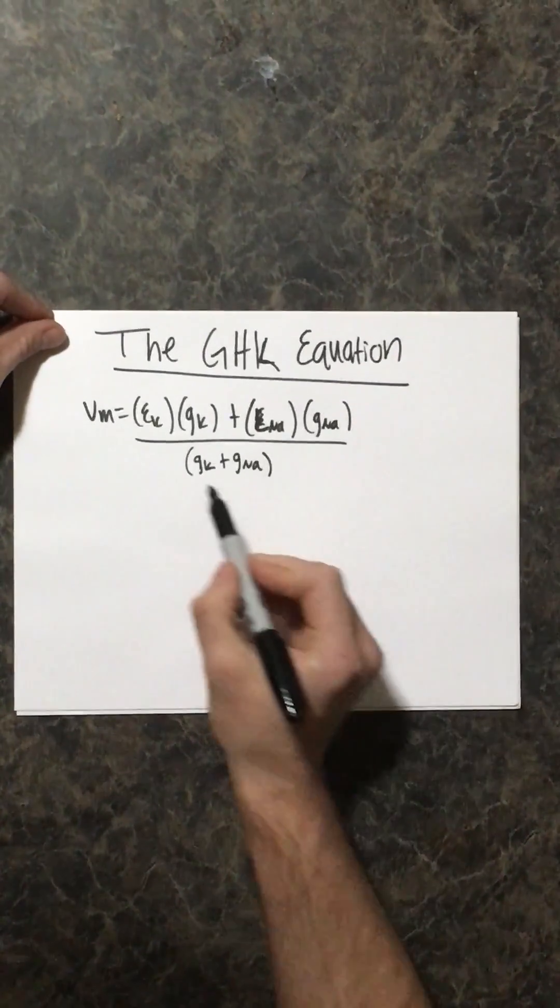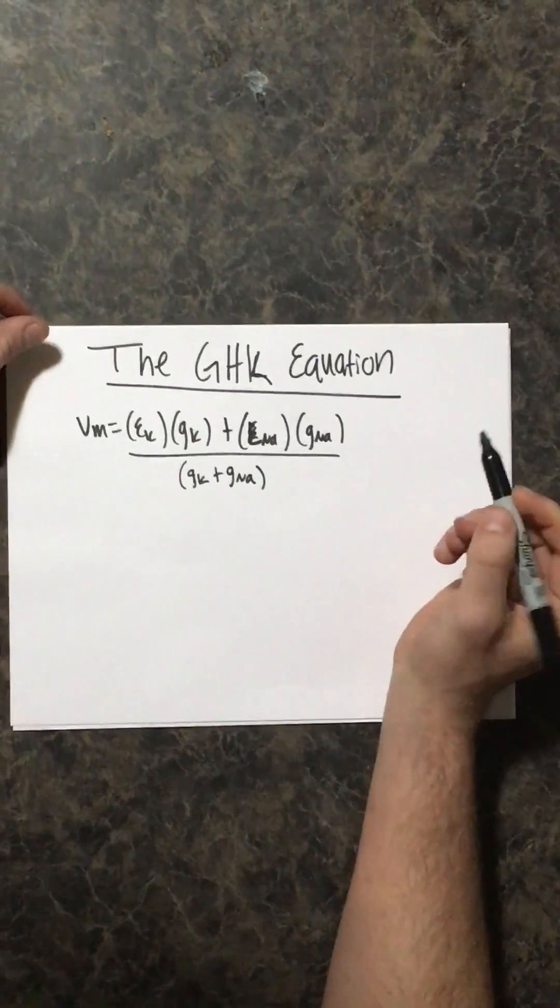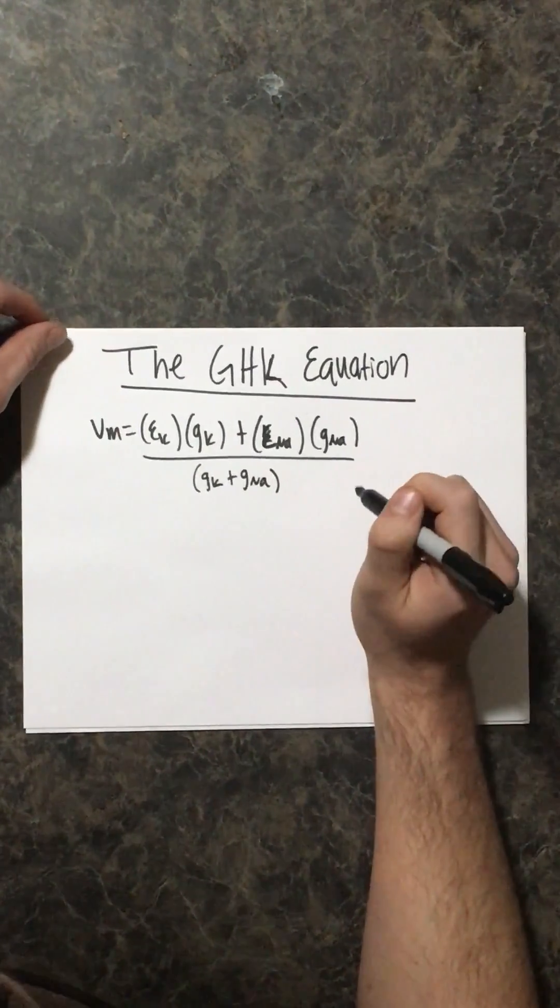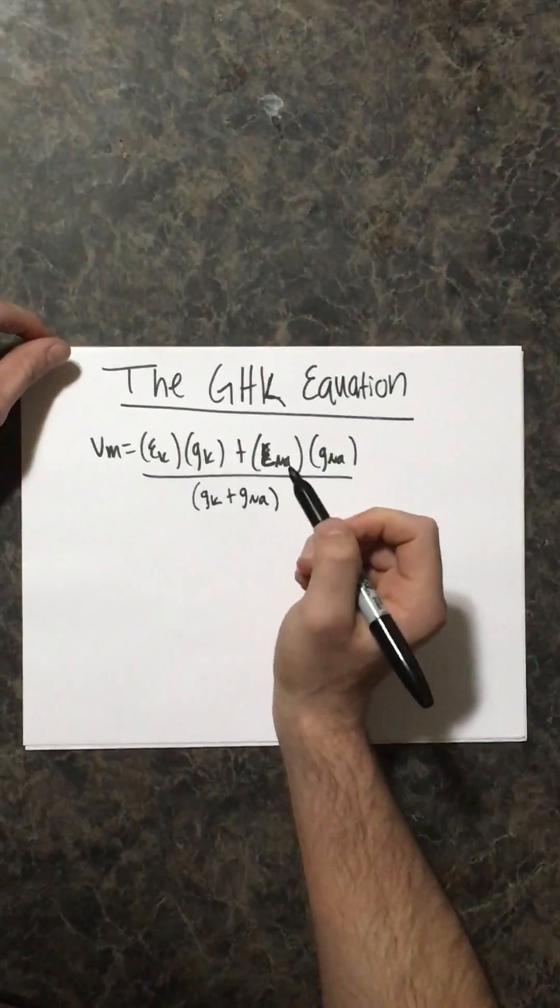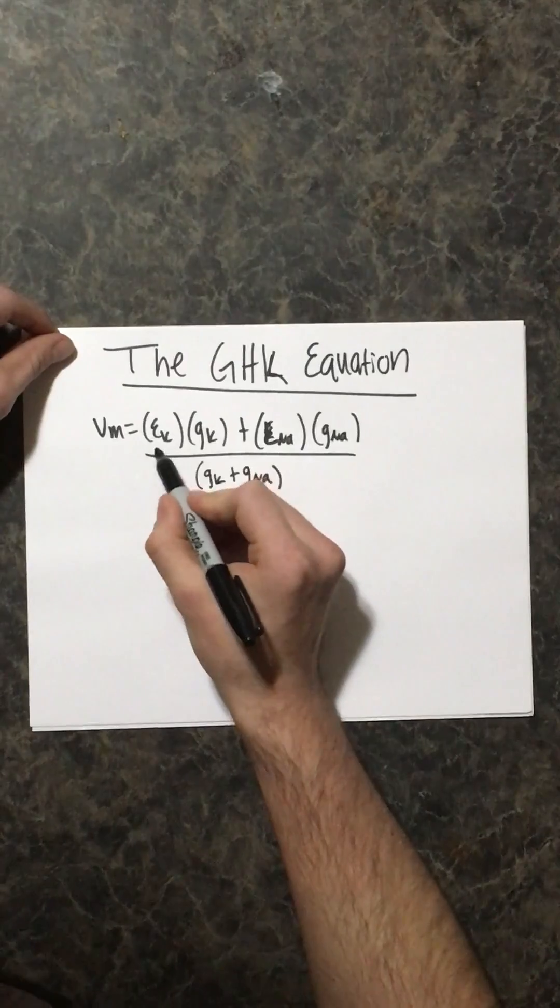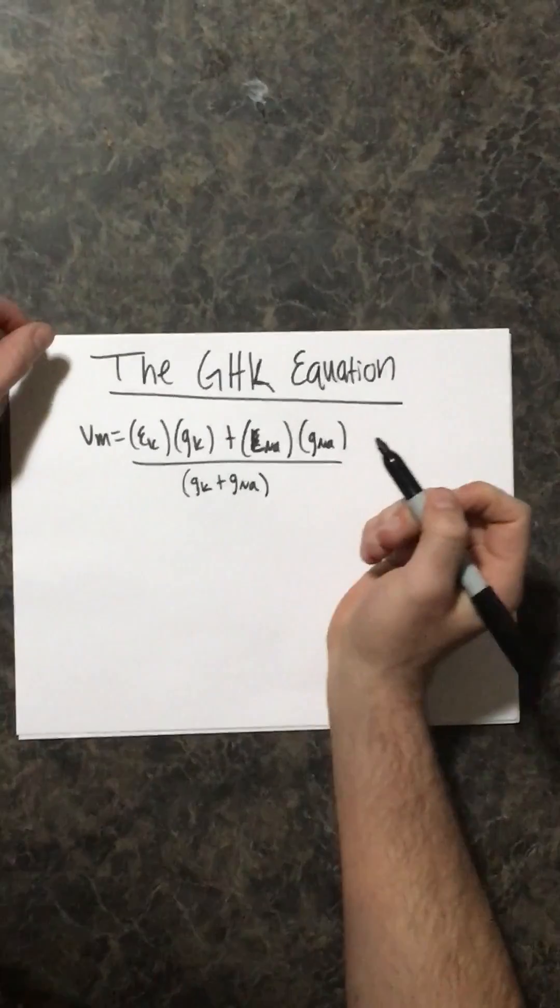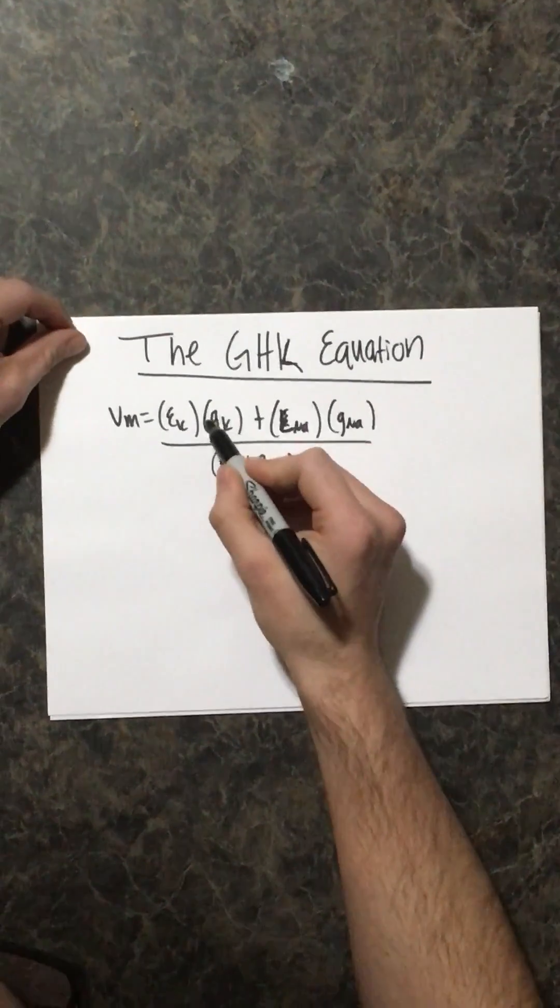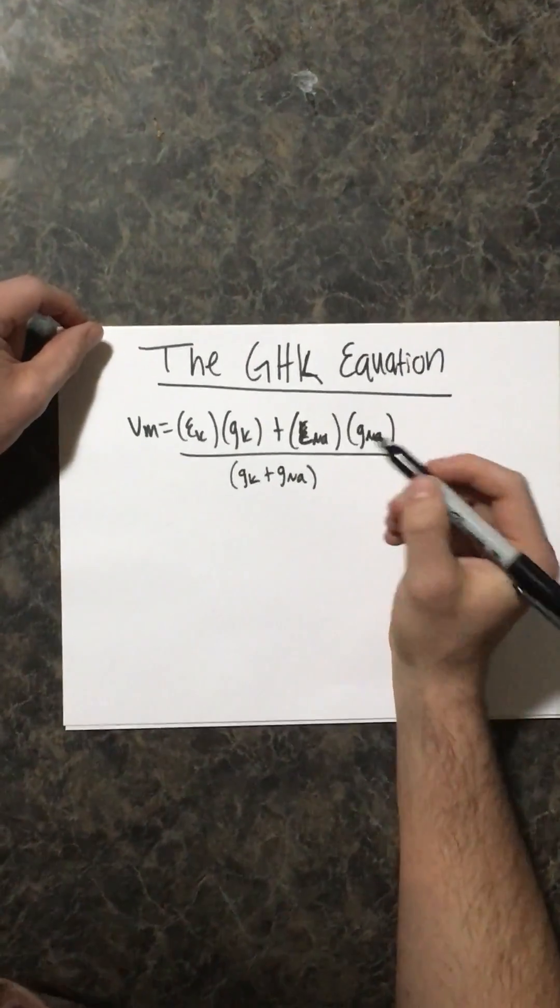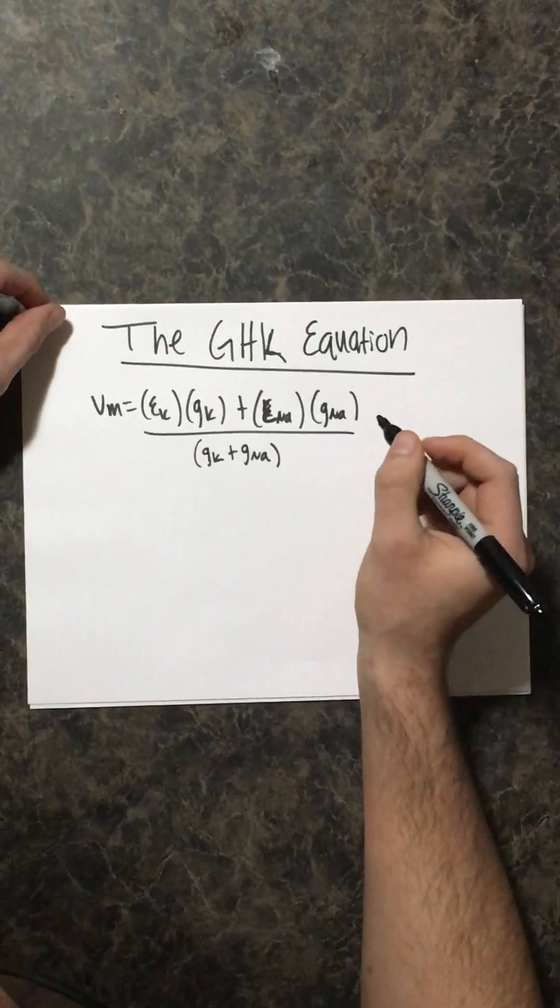So in this example, only two ions, potassium and sodium, are permeable to this cell. Now the E sub k represents the individual equilibrium potential that you solved for earlier. In this case right here, potassium multiplied by the conductance of potassium. Now conductance is usually given to you, and conductance represents G. And what conductance means is how permeable this ion is to the membrane.